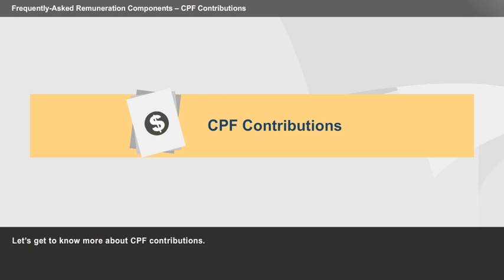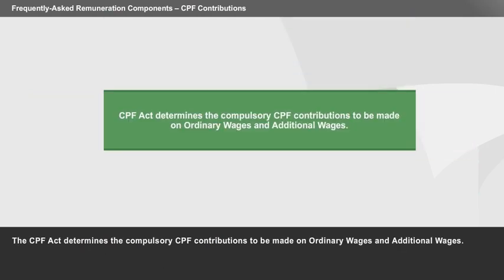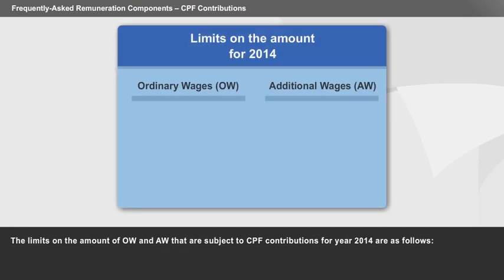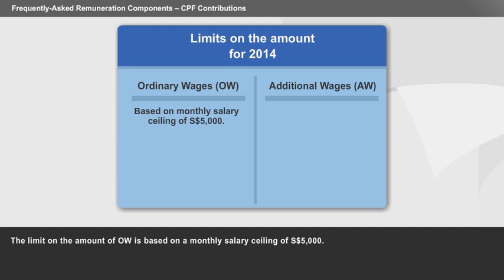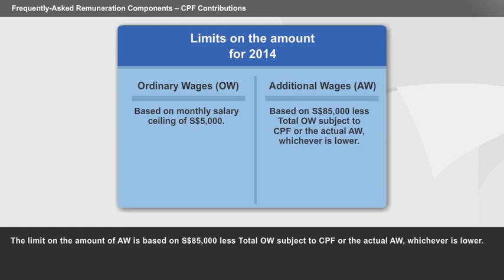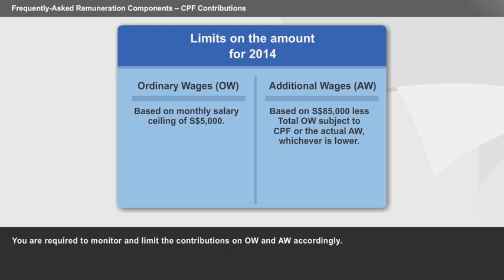Let's get to know more about CPF contributions. The CPF Act determines the compulsory CPF contributions to be made on ordinary wages and additional wages. The limits on OW and AW subject to CPF contributions for year 2014 are as follows: the limit on OW is based on a monthly salary ceiling of $5,000. The limit on AW is based on $85,000 less total OW subject to CPF, or the actual AW, whichever is lower. You are required to monitor and limit the contributions on OW and AW accordingly.